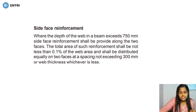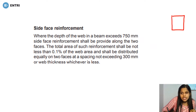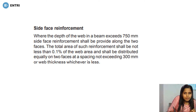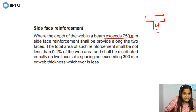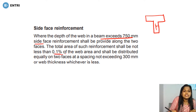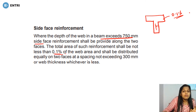This is side-face reinforcement. We will learn the reinforcement of the beam's side face. For the first case, when the depth of beam exceeds 750mm, the total area of side-face reinforcement shall be 0.1% of the web area. We distribute it equally on two faces, not exceeding 300mm or web thickness, whichever is less.